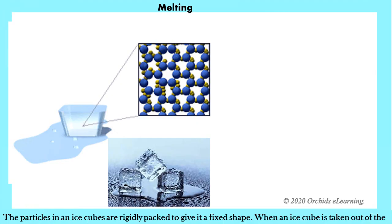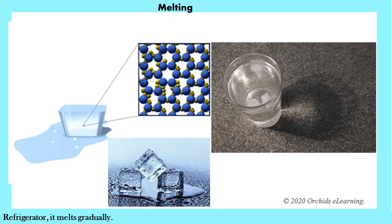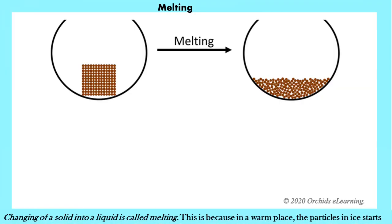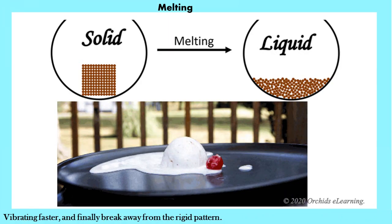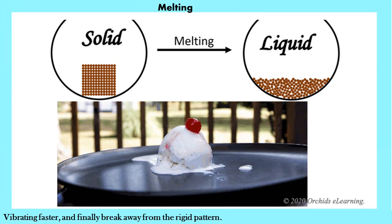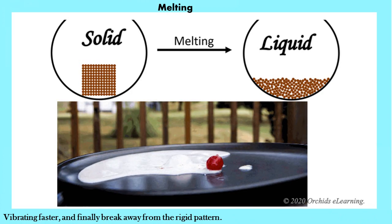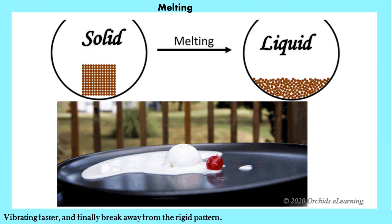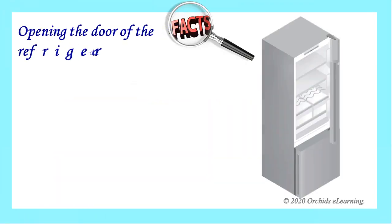Melting: the particles in an ice cube are rigidly packed to give it a fixed shape. When an ice cube is taken out of the refrigerator, it melts gradually. The changing of a solid into a liquid is called melting. In a warm place, the particles in ice start vibrating faster and finally break away from the rigid pattern, becoming loosely packed as in liquid form.